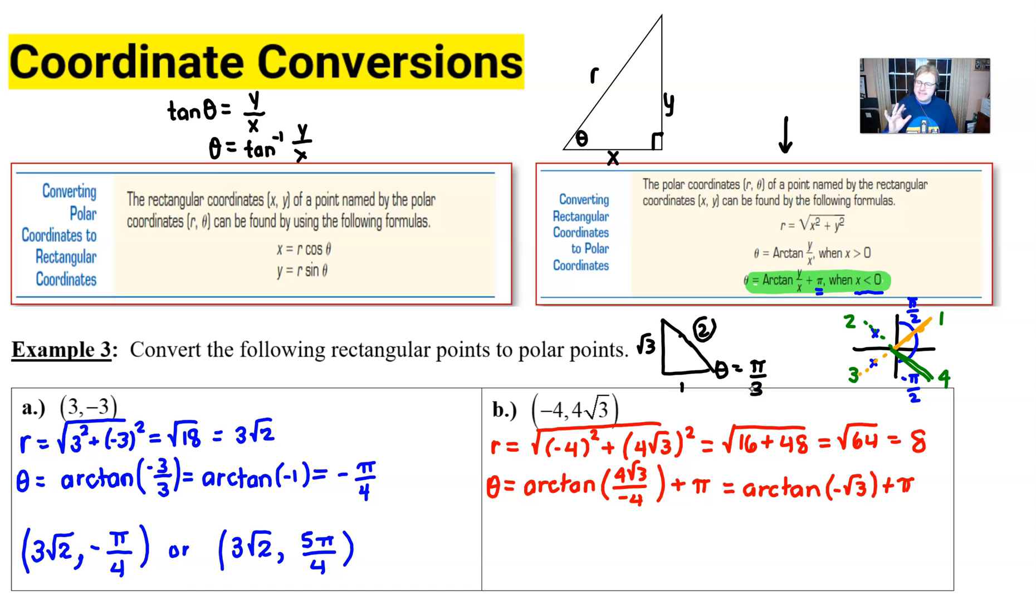Now the issue that we've got is that our value was negative root 3, which just simply means that I am at negative pi over 3. Now once I add pi to that, that's going to give me a 2 pi over 3, positive 2 pi over 3, and that's the theta that I want to pair up with my 8.